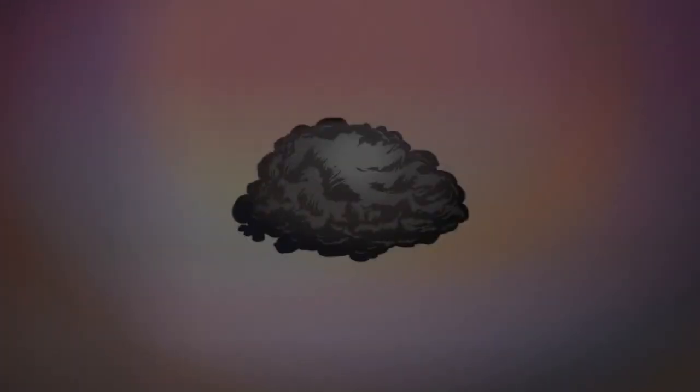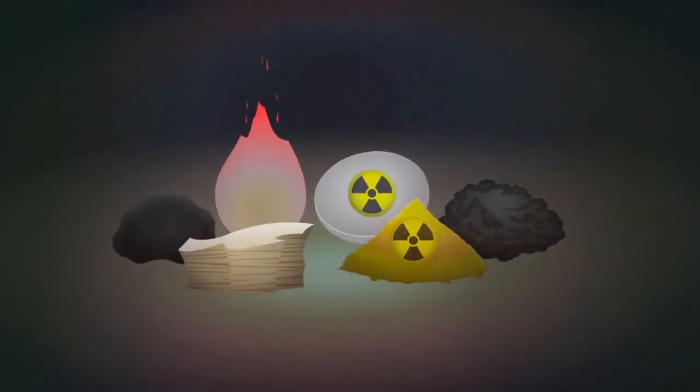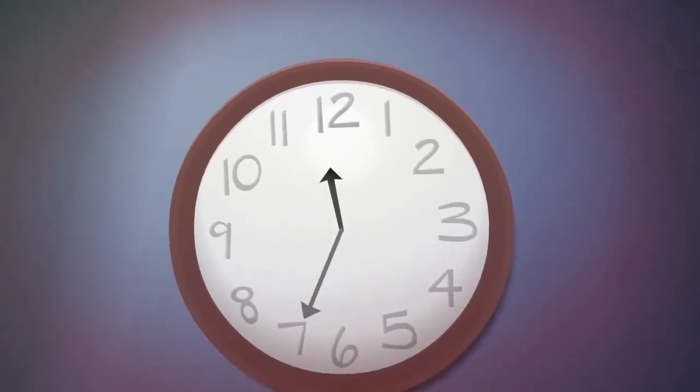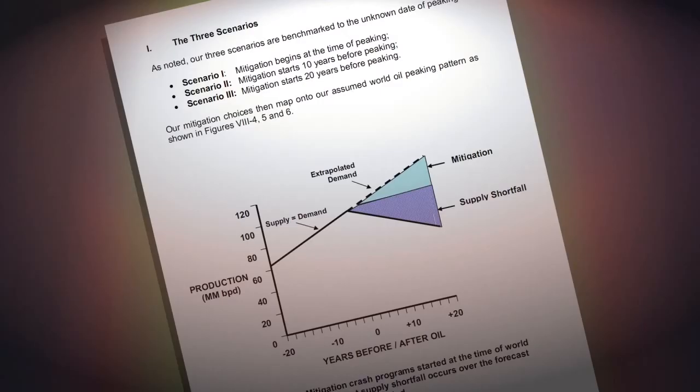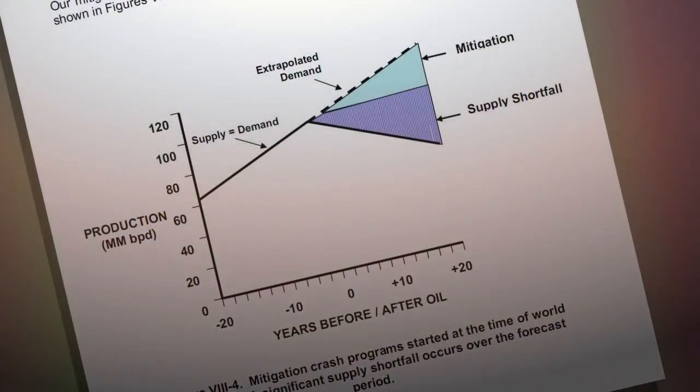Many economists believe that the free market will substitute one energy source with another through technological innovation. However, the main substitutes to oil face their own decline rates. Substitution also fails to account for the time needed to prepare for a transition. The US Department of Energy's Hirsch report estimates that at least two decades would be needed to prepare for the effects of peak oil.